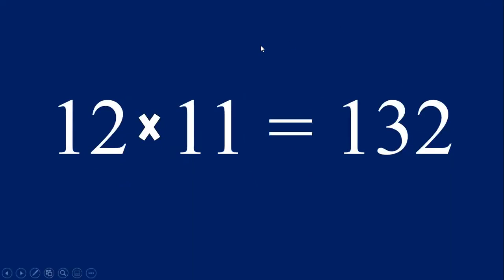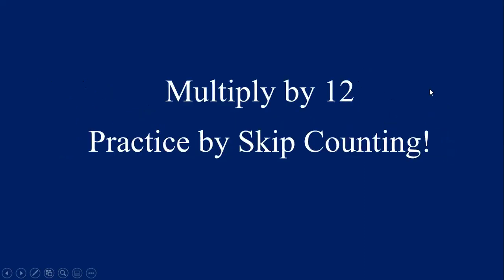Here's a quick little tip with elevens — this is fun too. Take the number you're multiplying eleven by and add its two digits together; that's your middle number, just squeezed in the middle. So for twelve times eleven, you have a one, one plus two is three, and two is your last number — one hundred and thirty-two. It's so fun!